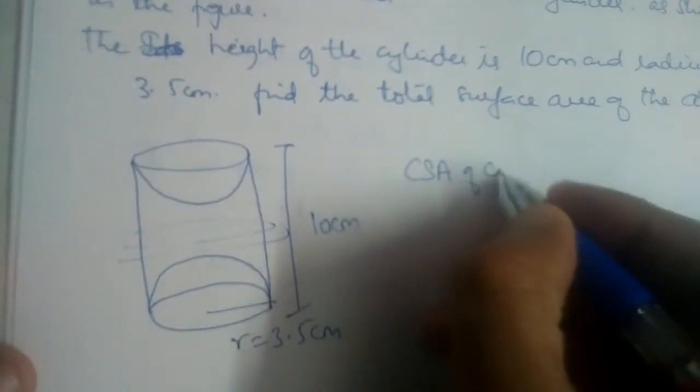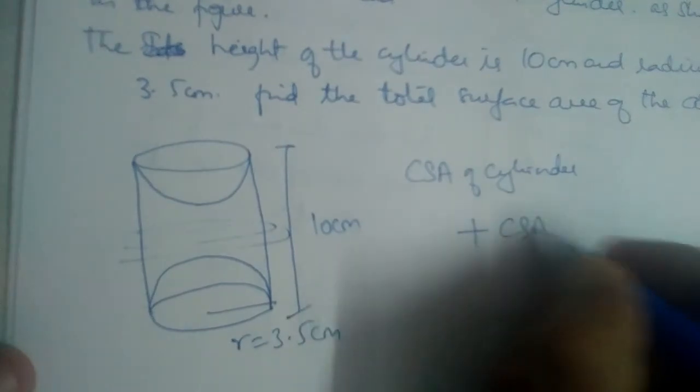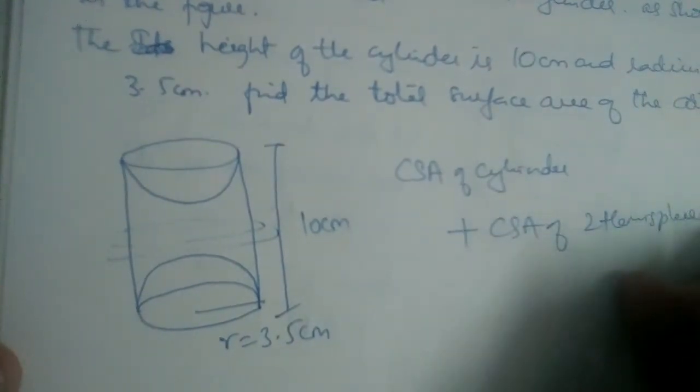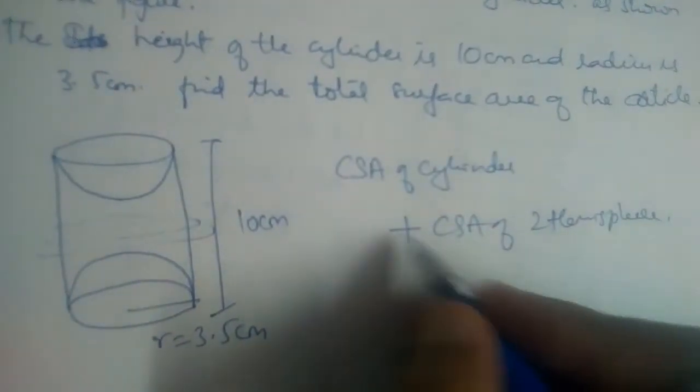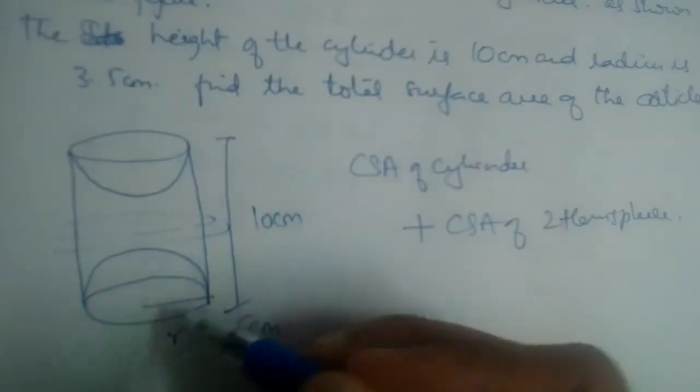So it is curved surface area of cylinder plus curved surface area of 2 hemispheres. We need to add. Most of the students will subtract thinking that we are taking out this, right?